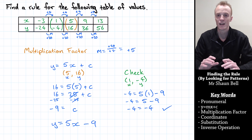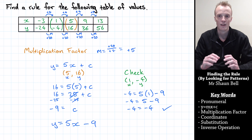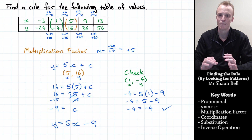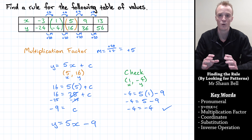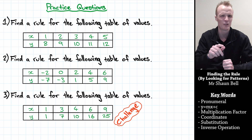To summarise: when you're given a table of values for a linear relationship and you want to find the rule by looking for patterns, you first need to find the multiplication factor — how much did y change for every plus 1 of x. The multiplication factor is the m value in y equals mx plus c. Then substitute one of the coordinates in to find the c value. Now it's your turn — there are three more questions for you to have a go at yourself. Question 3 is a bit more challenging, but give it a go.